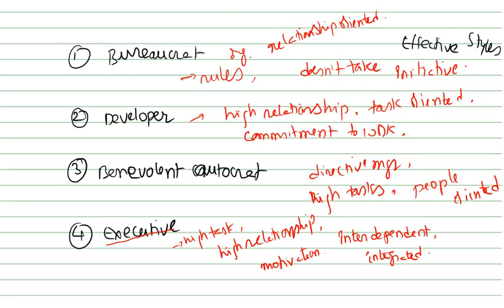That is what requires dedication - high commitment is required in the organization. That we consider as bureaucrat, developer, benevolent autocrat, and executive. This is what is concerned with the 3D model of managerial behavior.